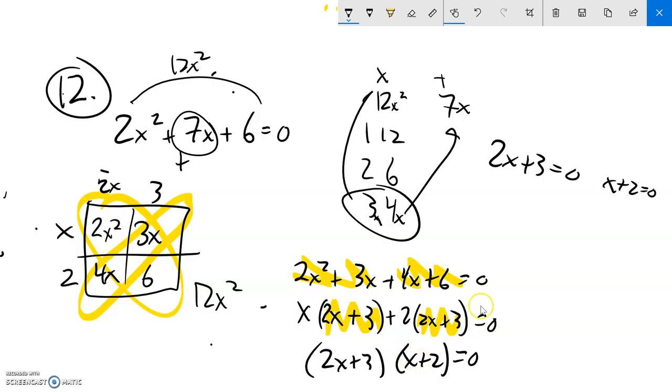And if I solve those both, on the right-hand side here, subtract 2 from both sides. On this left-hand side, subtract 3 from both sides, divide by 2. And x equals negative 3 halves or negative 2. And there's my two answers.